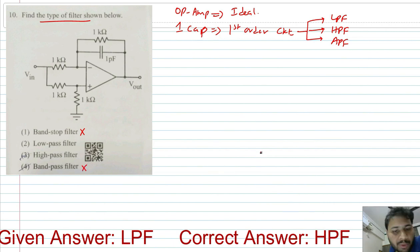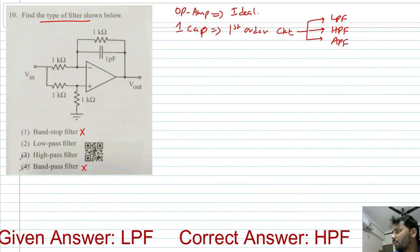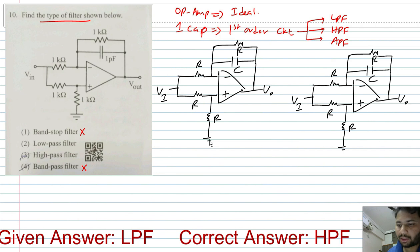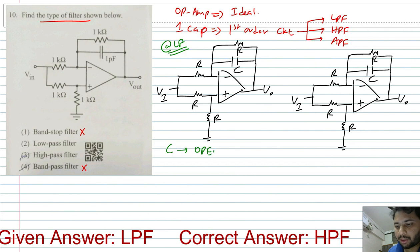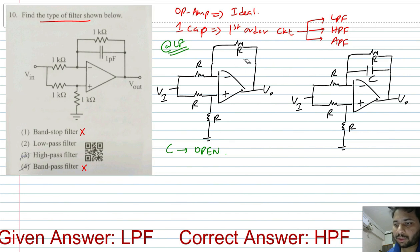Now we have to choose between low-pass and high-pass. How do you decide? By simply finding the output or the gain at low and high frequencies. First, let us find the gain at low frequency. At low frequency, the capacitor behaves like an open circuit, so we can simply remove the capacitor and find the output.